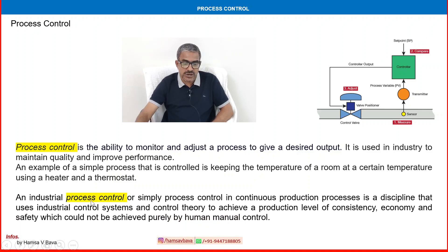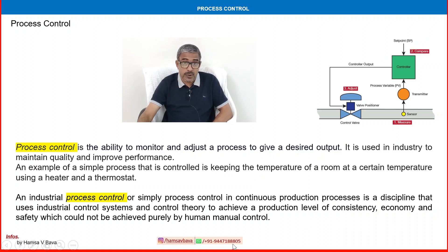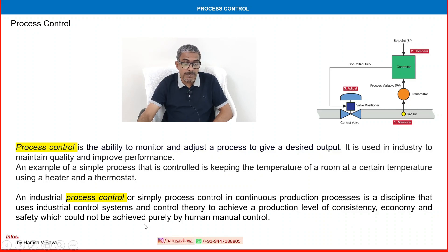Industrial process control is simply process control in a continuous production process. It is a discipline that uses industrial control systems to achieve a production level of consistency, economy, and safety, which could not be achieved purely by human manual control.